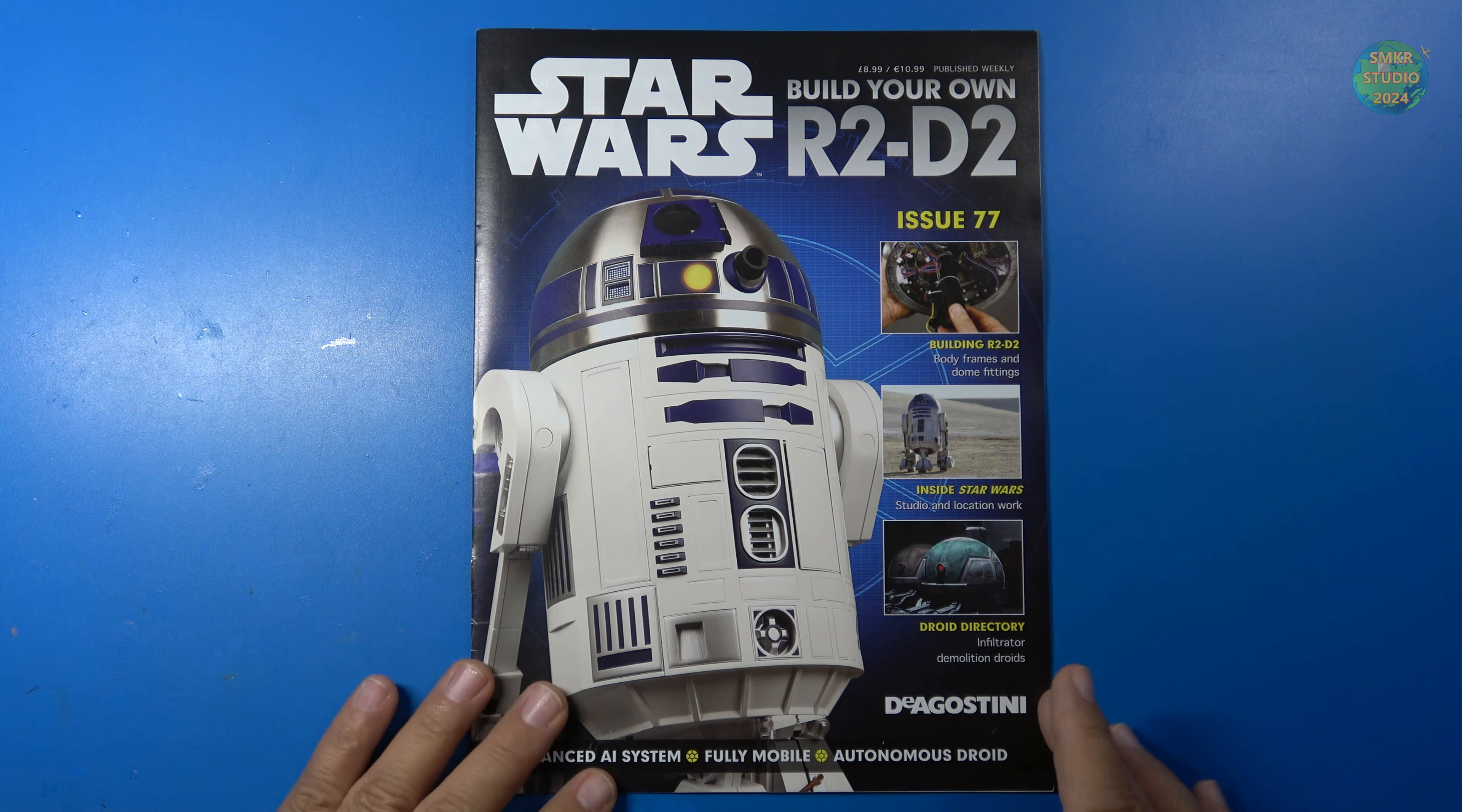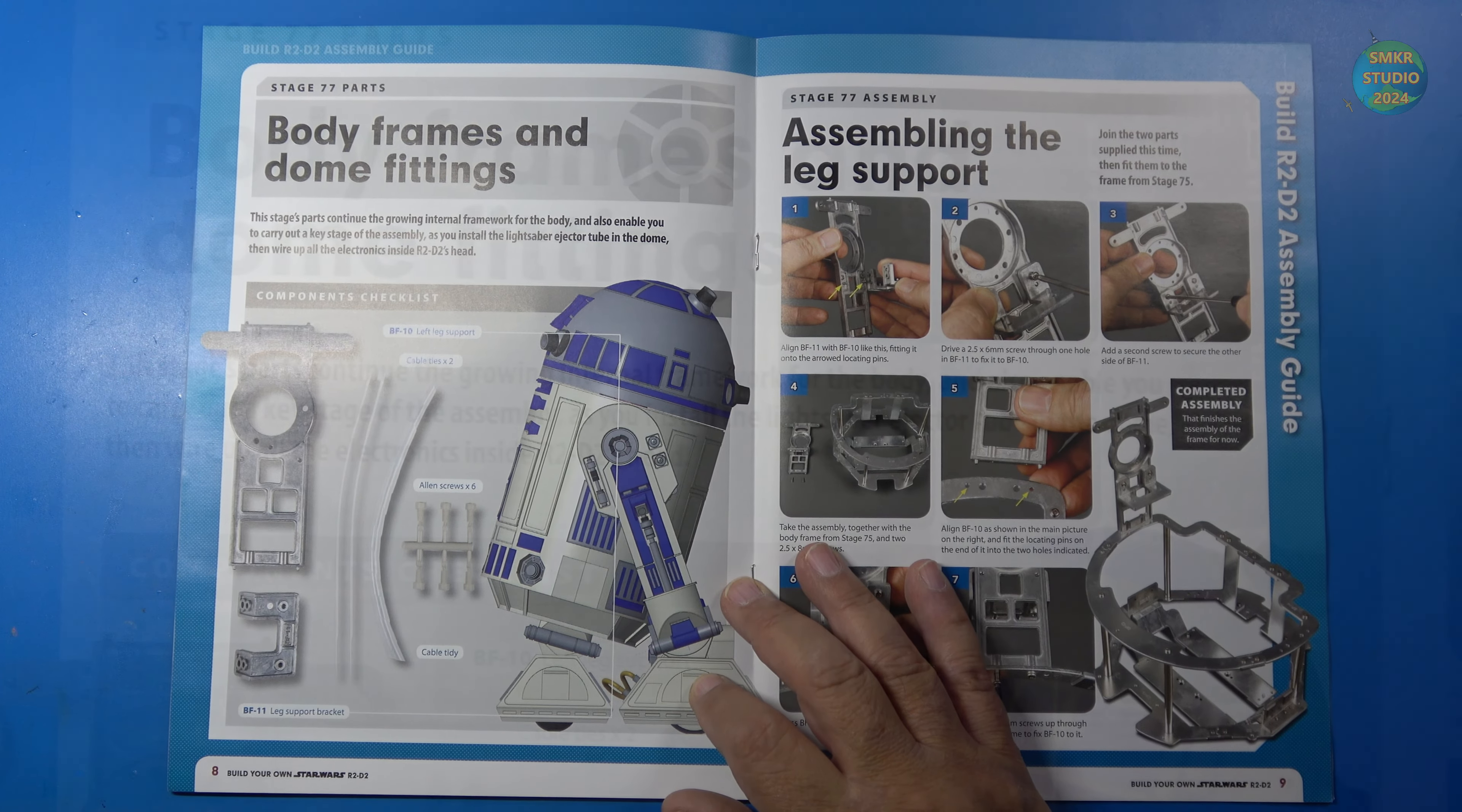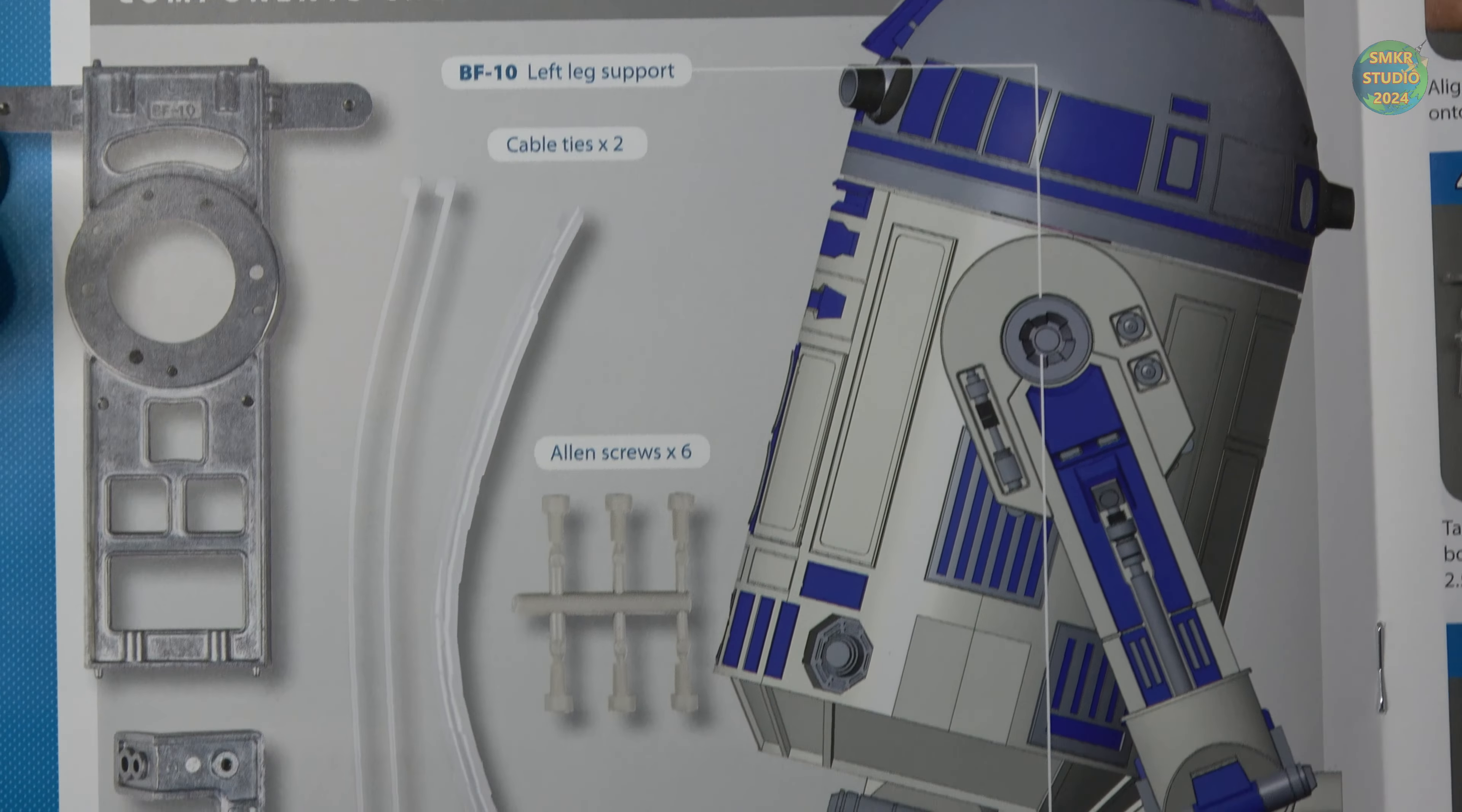Let's go ahead and look at the instructions here first. We'll build this up and then I'll show you the entire magazine afterwards. If you like my content please subscribe to my channel and smash that like button. As you can see here, we have a listing of all the parts that were received in this stage, stage 77.